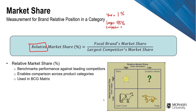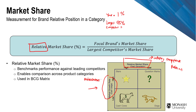The BCG matrix is a framework by Boston Consulting Group to evaluate the strategic position of a business portfolio and its potential. It operates on two dimensions: relative market share, which assesses your industry competitive position, and market growth rate, which represents attractiveness. If both are high, you have a 'star.' If growth is low but competitive position is high, that's a 'cash cow' — you're just milking it for cash.